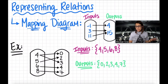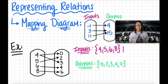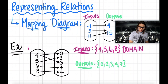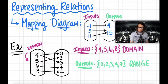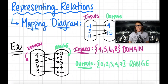Finally, our mapping diagram. The domain was our set of inputs: 4, 5, 6, and 8 — you could label this as the domain, or describe it as everything in the bubble on the left. The range was the set of outputs: 0, 2, 3, 4, and 7 — or everything that's in the right bubble in the mapping diagram.